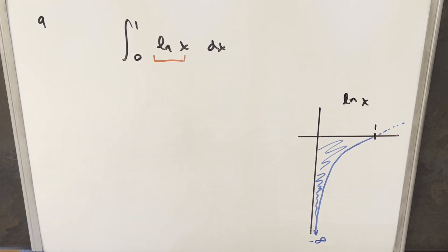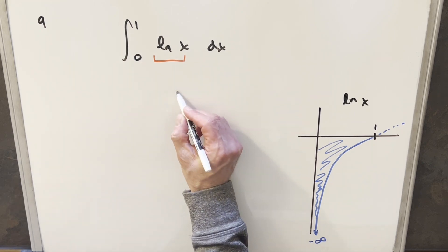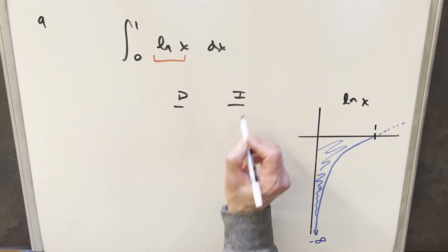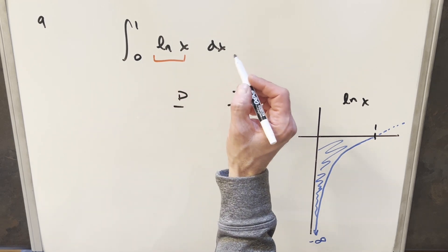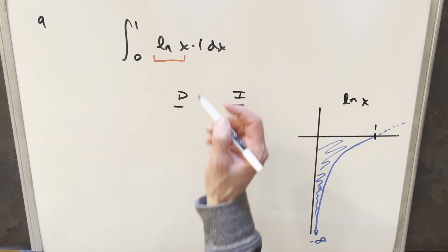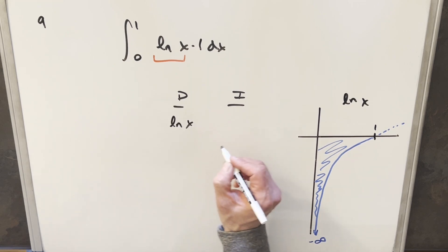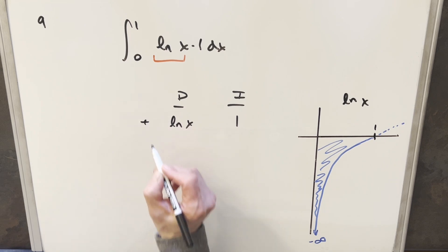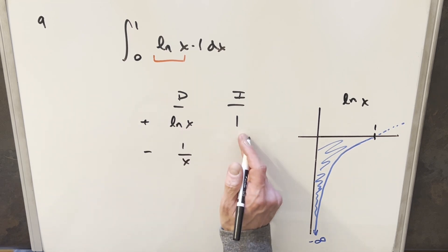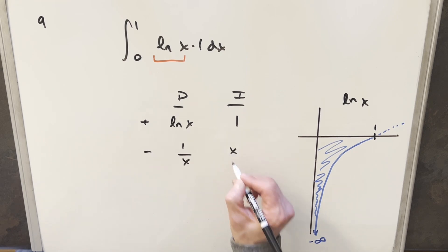Rather than just writing down the answer, let's do the integration by parts for this. I'm going to use the DI method or tabular integration. I'll create a one right there. So we have two things, and I'll differentiate natural log x, and I'll integrate the one. The derivative of ln x is just going to be one over x, and the integral of one is just x.